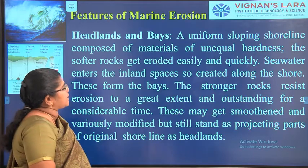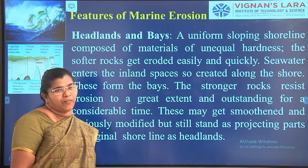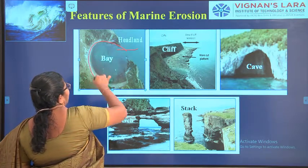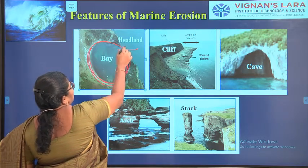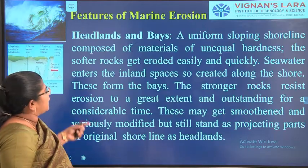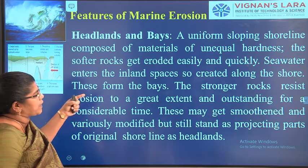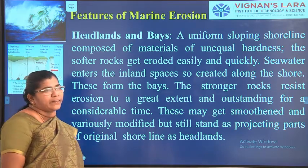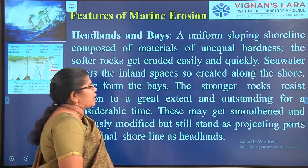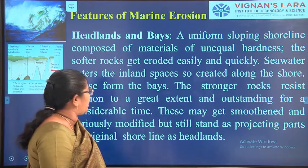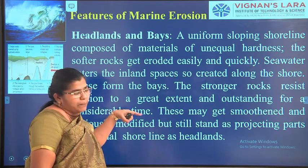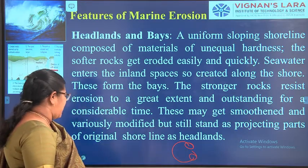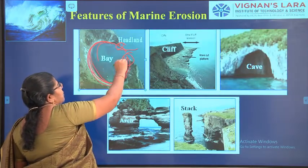Headlands and bays: many of you know what a bay is — Bay of Bengal is the biggest bay in the world. A uniform sloping shoreline composed of materials of unequal hardness — softer rocks get eroded easily and quickly. Where the surface has very soft and uneven rock, it will be washed away very quickly — this forms the bay. The harder projecting parts are called headlands. As erosion continues one by one, the surface becomes very smooth.